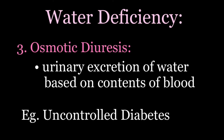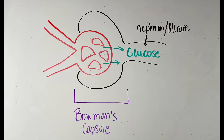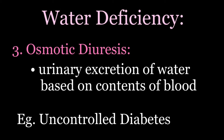A third cause of water deficiency is osmotic diuresis — excreting large amounts of water due to certain substances in the bloodstream. The primary example is high blood sugar. When blood sugar is really high, it exceeds the renal threshold and cannot be reabsorbed, so glucose remains in the filtrate. Since the nephron and bloodstream are adjacent, water moves by osmosis from the blood into the nephron, and we lose water from the bloodstream and become hypernatremic. Uncontrolled diabetes can therefore cause hypernatremia.